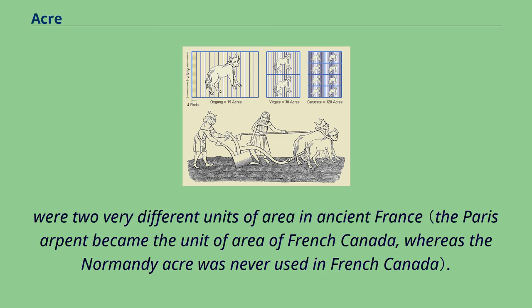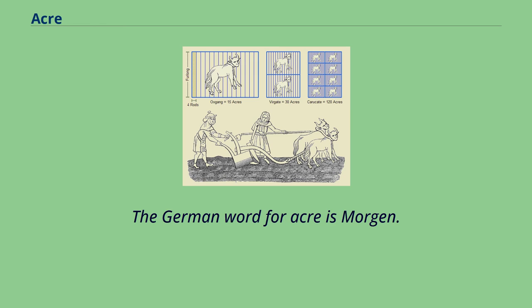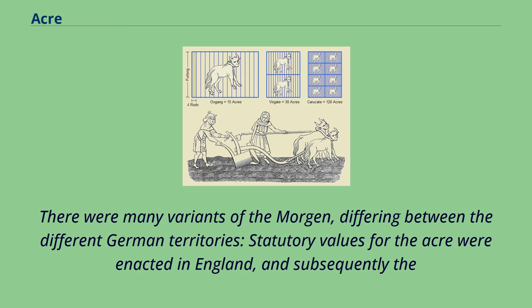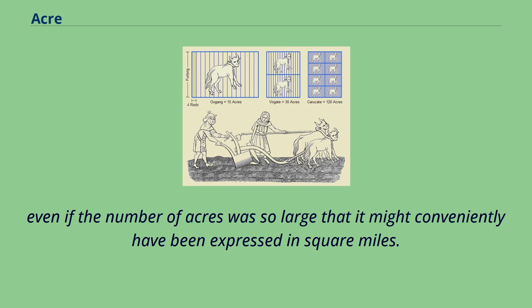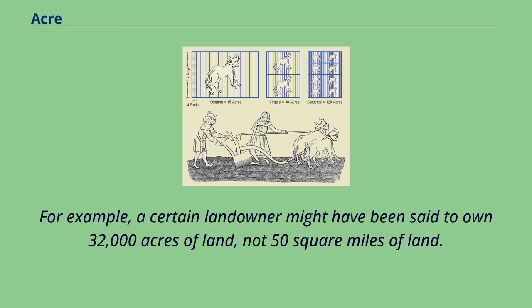The German word for acre is Morgen. There were many variants of the Morgen, differing between the different German territories. Historically, the size of farms and landed estates in the United Kingdom was usually expressed in acres, even if the number of acres was so large that it might conveniently have been expressed in square miles. For example, a certain landowner might have been said to own 32,000 acres of land, not 50 square miles of land.